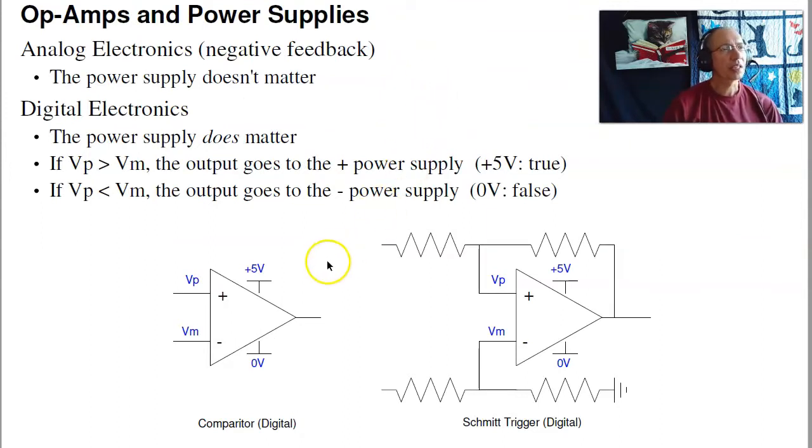Now the power supplies do matter. So when you go into CircuitLab, there's two different op amps. Here you've got to make sure you use the op amp where the power is specified. That is going to affect how the circuit behaves.